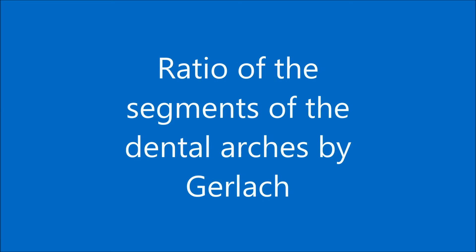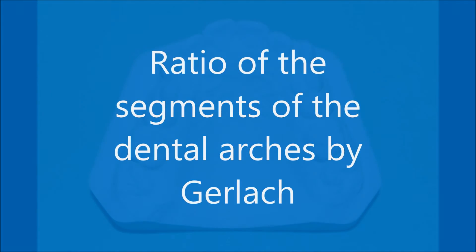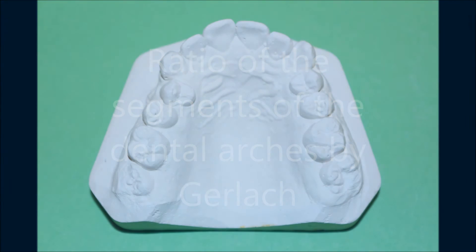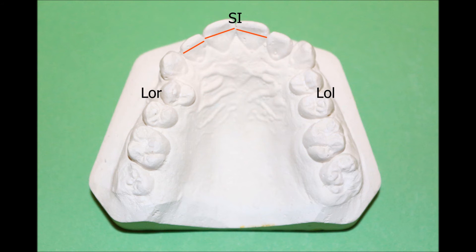Ratio of segments of the dental arches by Gerlach. Gerlach divided dental arches into segments in accordance with their functions. The frontal segment includes 4 incisors. Lateral segments include canines, first and second premolars, and the first permanent molar.